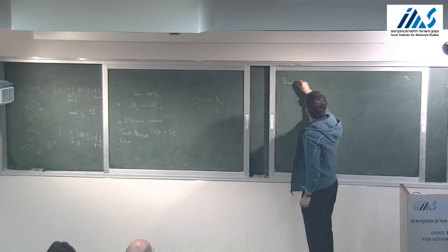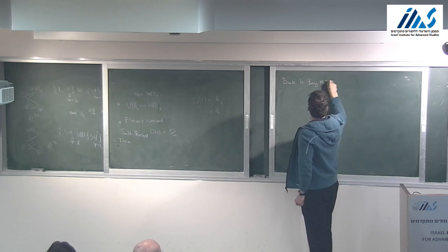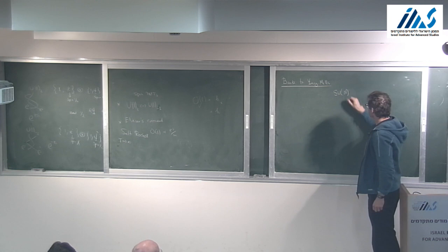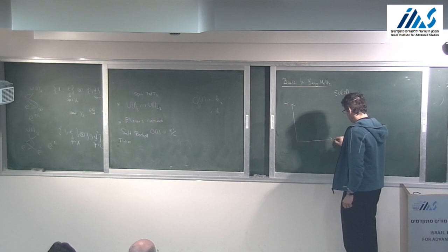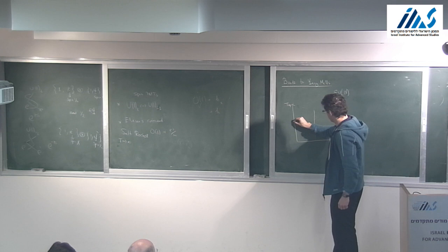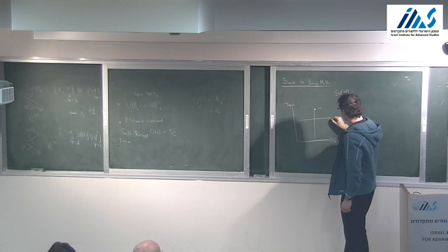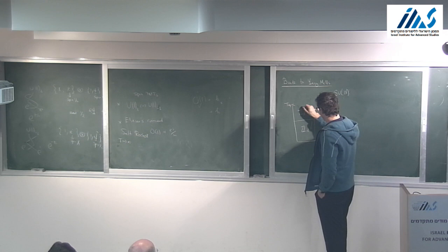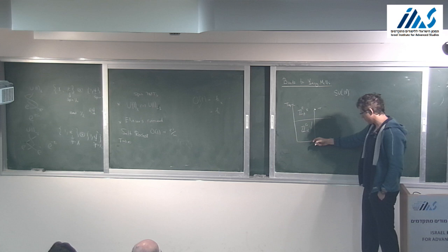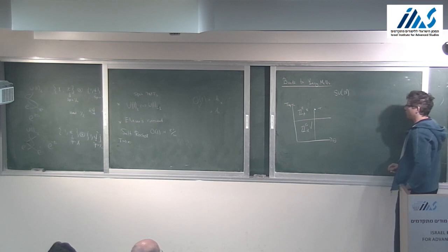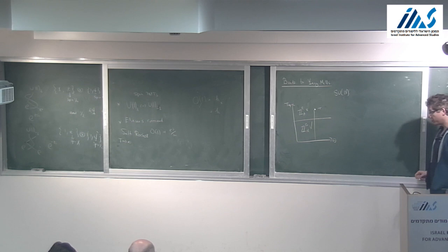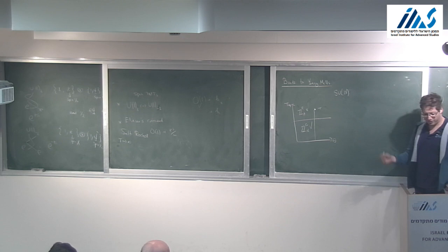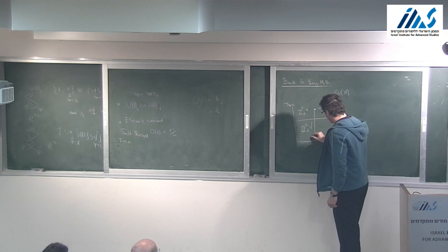Let's go back to Yang-Mills. We discussed the pure SU(N) gauge theory phase diagram as a function of temperature and the theta angle. The idea is there are two phase transitions: here time reversal symmetry is restored and here there is deconfinement. The Z-N symmetry is broken in the deconfined phase and respected in the confined phase. The CP symmetry or time reversal symmetry is broken below a special temperature and obeyed above it. Using anomalies, you can prove this intersection must take place.